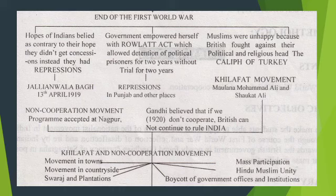End of the First World War. After the war, hopes of all Indians for getting concessions from the British were destroyed. Instead they faced repressions, like the Jallianwala Bagh massacre on 13 April 1919, where General Dyer had innocent protestors shot.